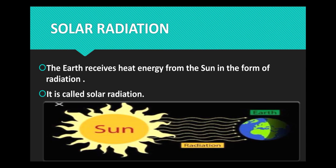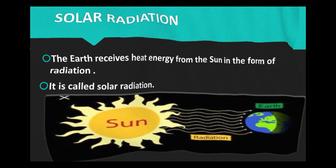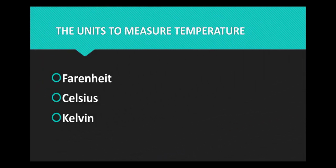Solar radiation. The Earth receives heat energy from the sun in the form of radiation. It is called solar radiation. The sun is the only source of light to all the planets in the solar system. The land, water and air in our planet receives heat from the sun.